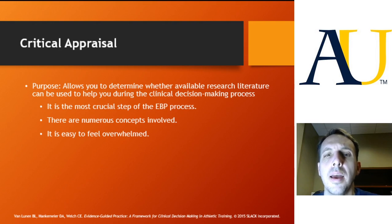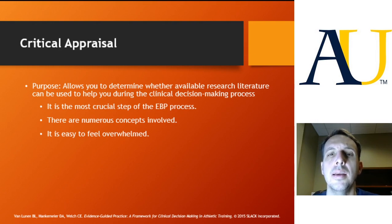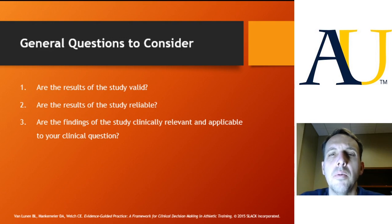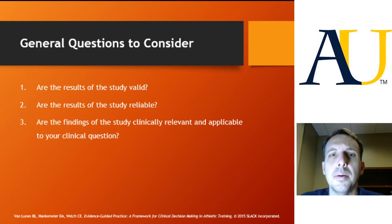We've talked about the fundamentals and some scales that can help, but now we need to get down to the actual components associated with the appraisal and moving into Step Four — the application. When we go about doing this critical appraisal, it really comes down to three questions, and I would add a fourth one myself. The three questions are: are the results valid, are they reliable, and are they relevant or applicable?